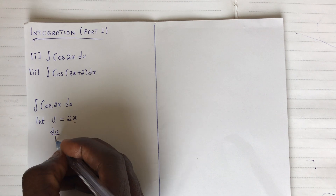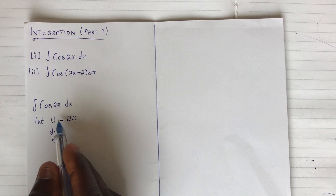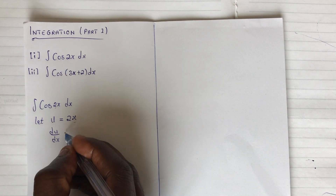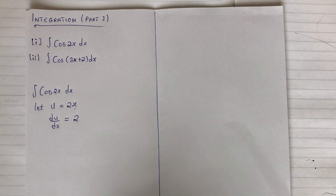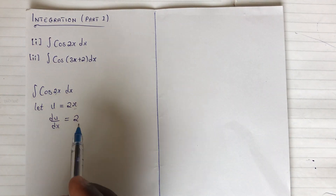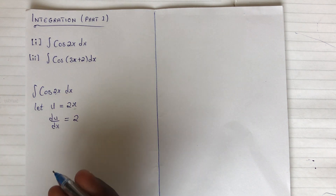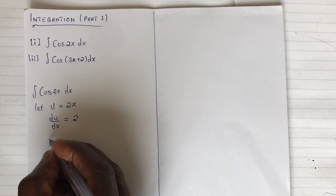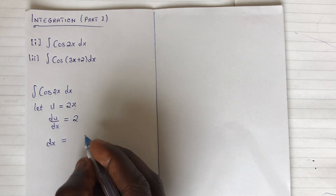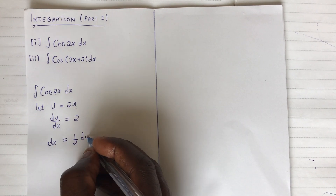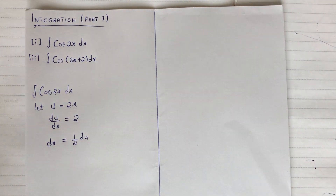So when I differentiate this, I'm having du/dx, which is the derivative of u with respect to x, and that is going to give me 2. Now, I need to make dx the subject, because when you look at the function, there is a dx term here. So dx is going to give me 1 over 2 du.